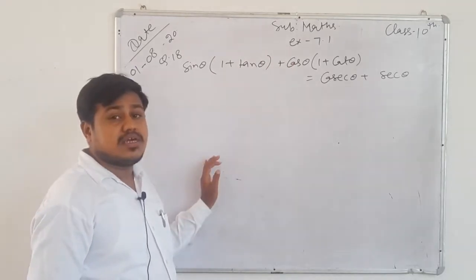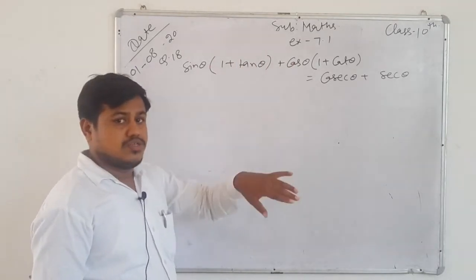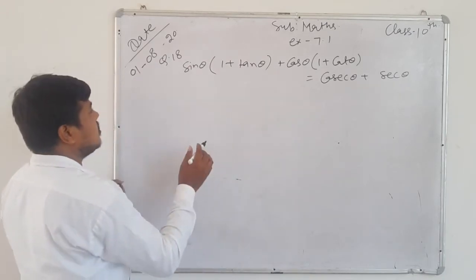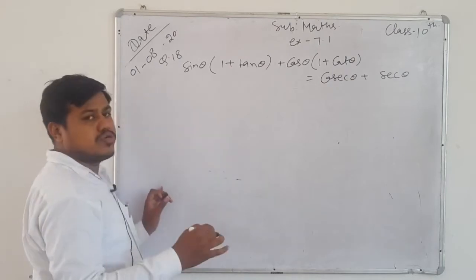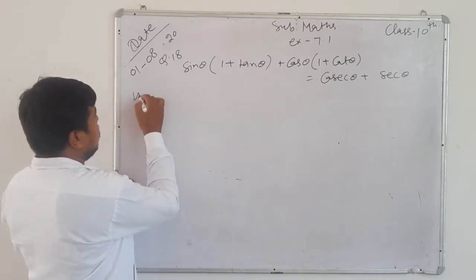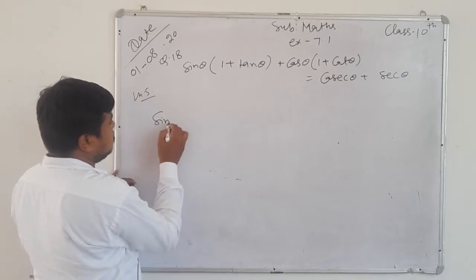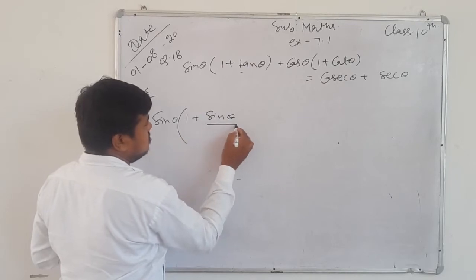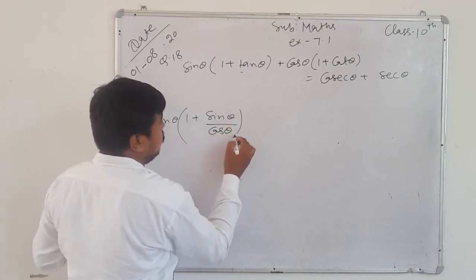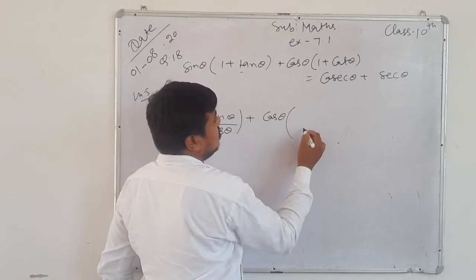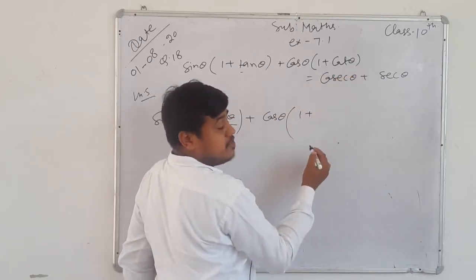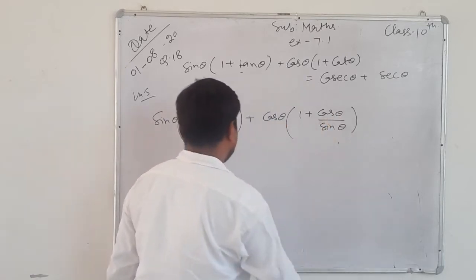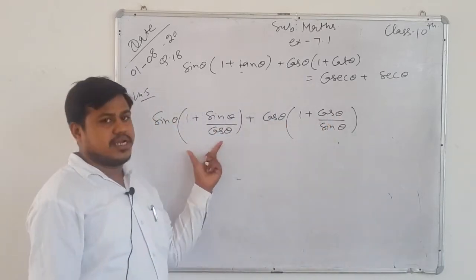We can't rationalize, we can't use an algebraic identity, so trigonometric identity — can we take common? We can't. So what we can do: use a trigonometric identity. Write sin θ(1 + tan θ) as sin θ(1 + sin θ/cos θ), and cos θ(1 + cot θ) as cos θ(1 + cos θ/sin θ). Now you can see these two brackets.